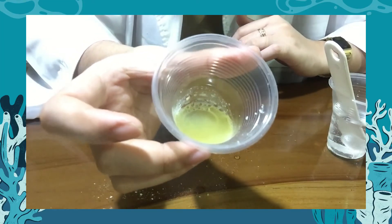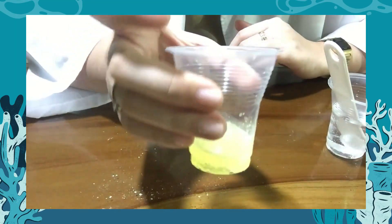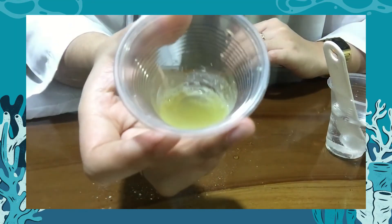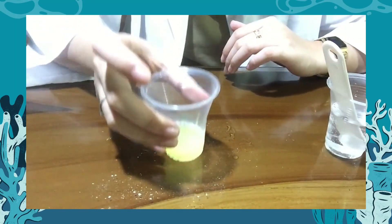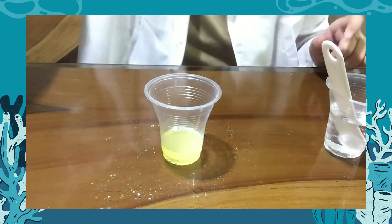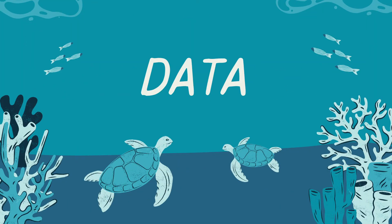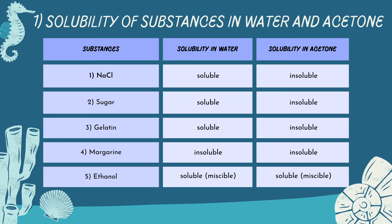I think we're done, and we witnessed the chemical reactions that occurred. Thank you. After performing the experiment, we will now proceed to the summarization of data on the solubility of substances in water and acetone. The five substances tested are sodium chloride, sugar, gelatin, margarine, and ethanol.